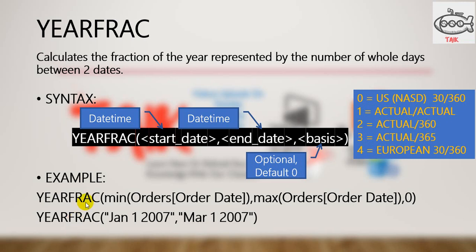An example is: YEARFRAC(MIN(Orders[OrderDate]), MAX(Orders[OrderDate]), 0) — it will calculate the year fraction between those two dates. Or you can enter dates manually, for example: YEARFRAC(January 1, 2007, March 1, 2007) — it will return the exact number of years with the fraction.